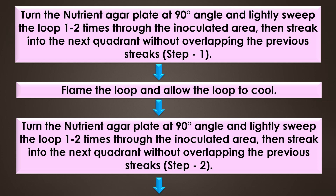After step one, flame the loop and allow it to cool. Next, turn the nutrient agar plate at 90 degrees and lightly sweep the loop one to two times through the inoculated area. Then streak into the next quadrant without overlapping the previous streak. This is step two.